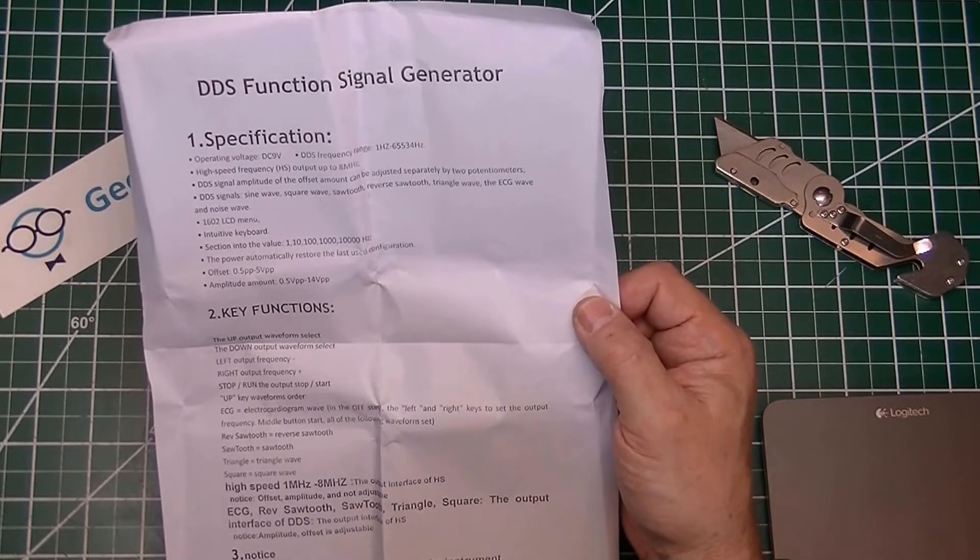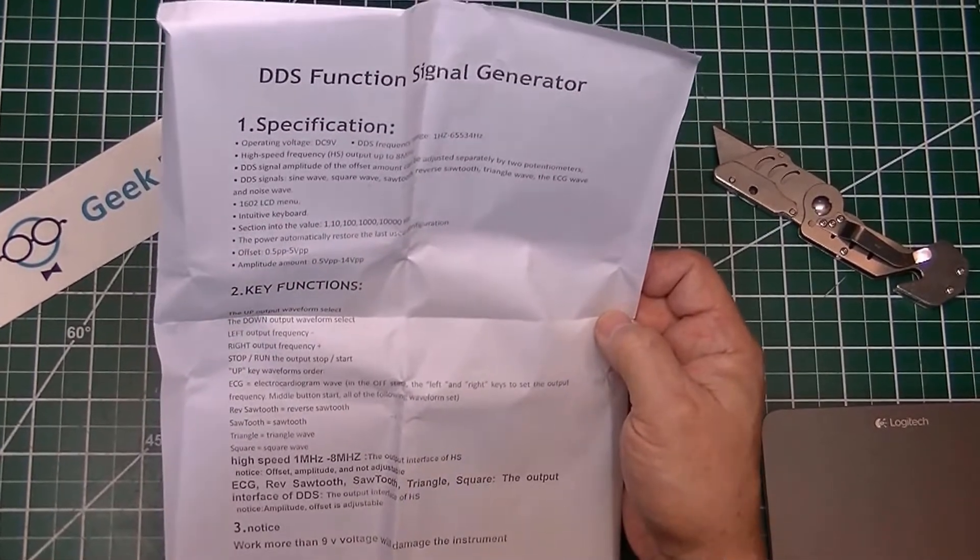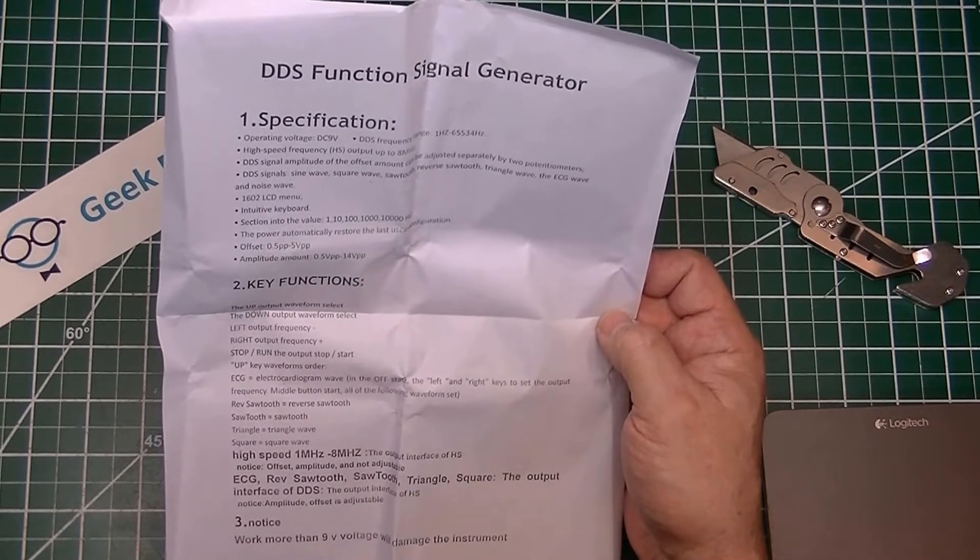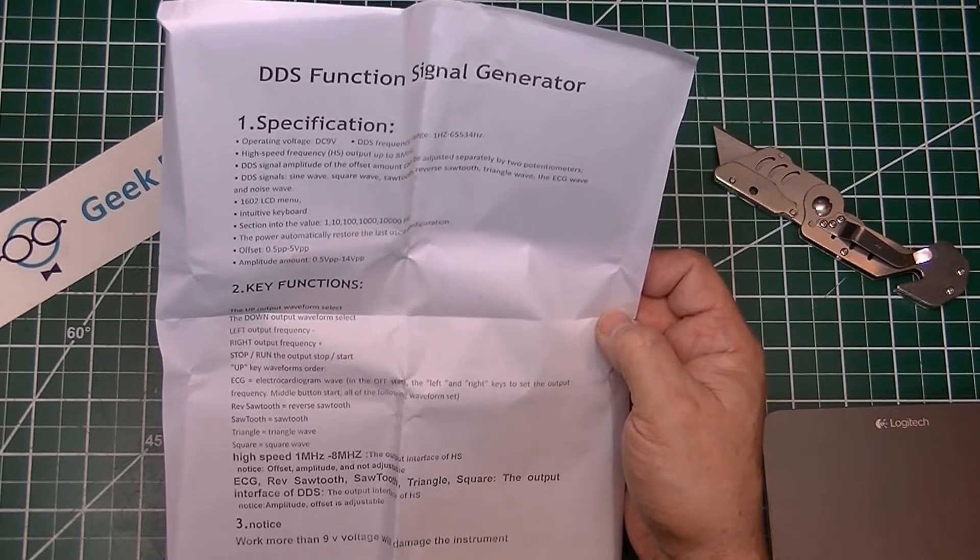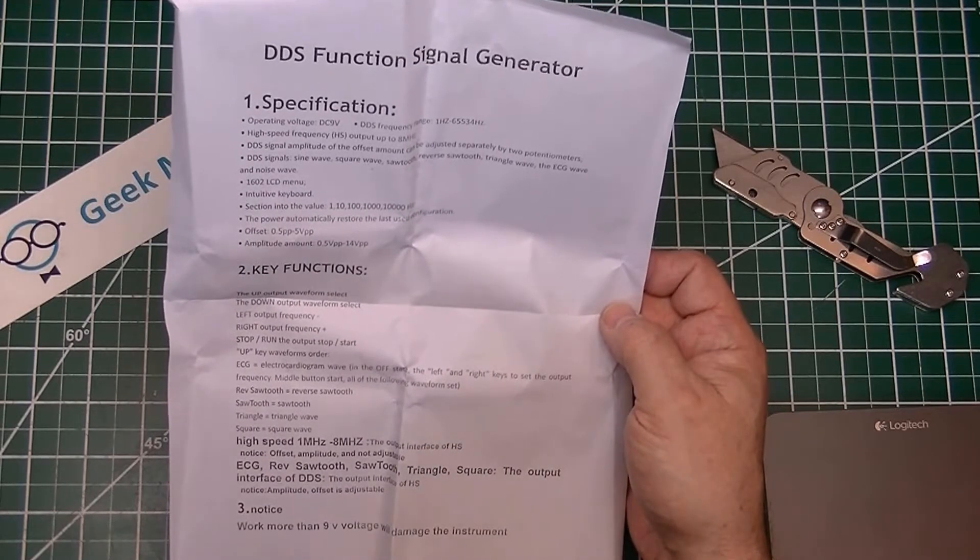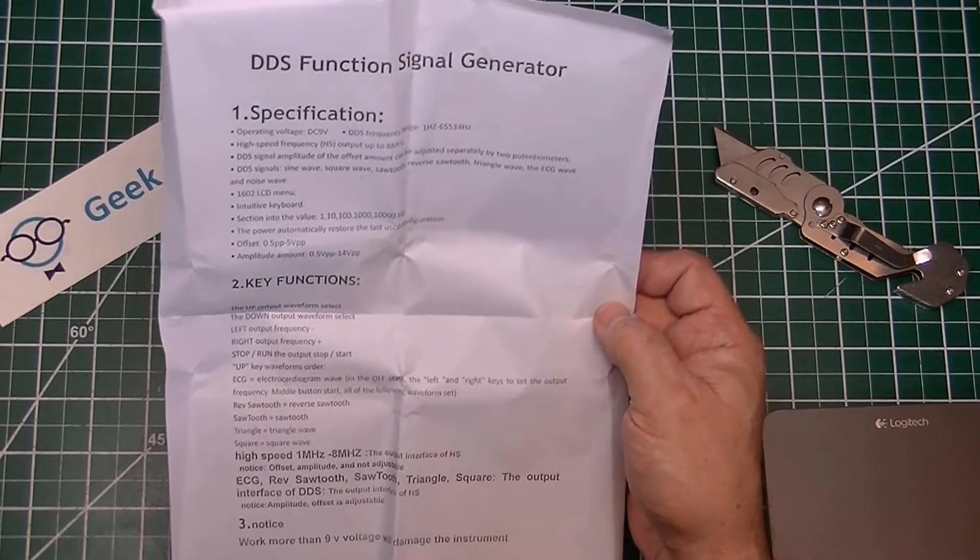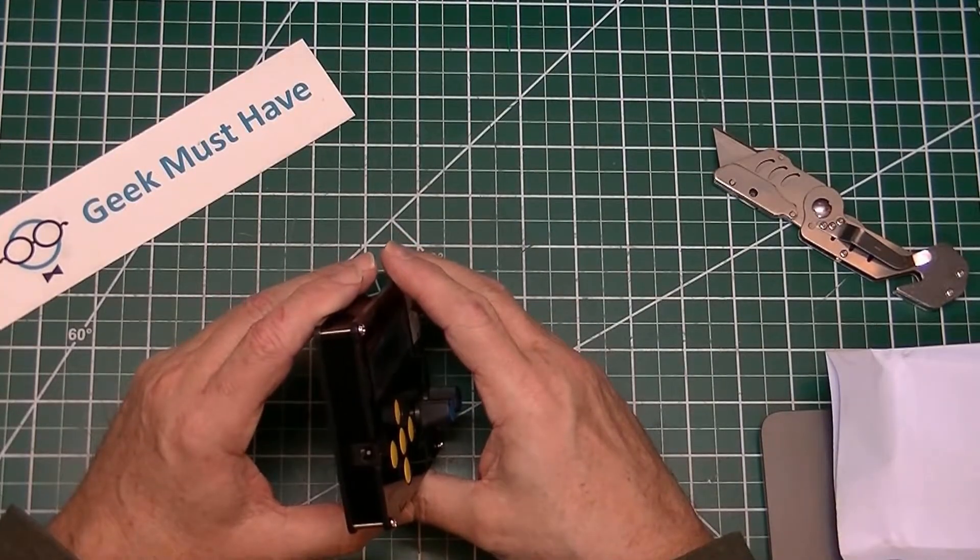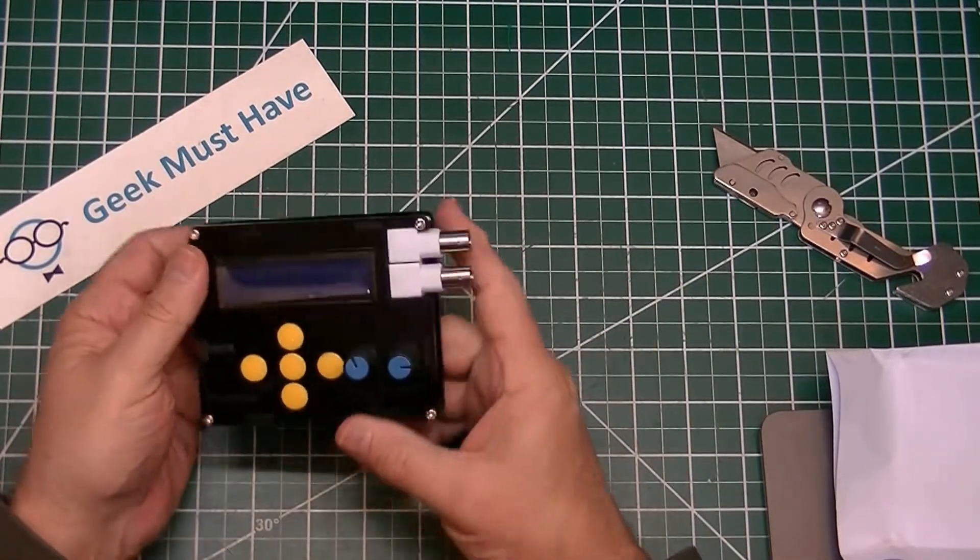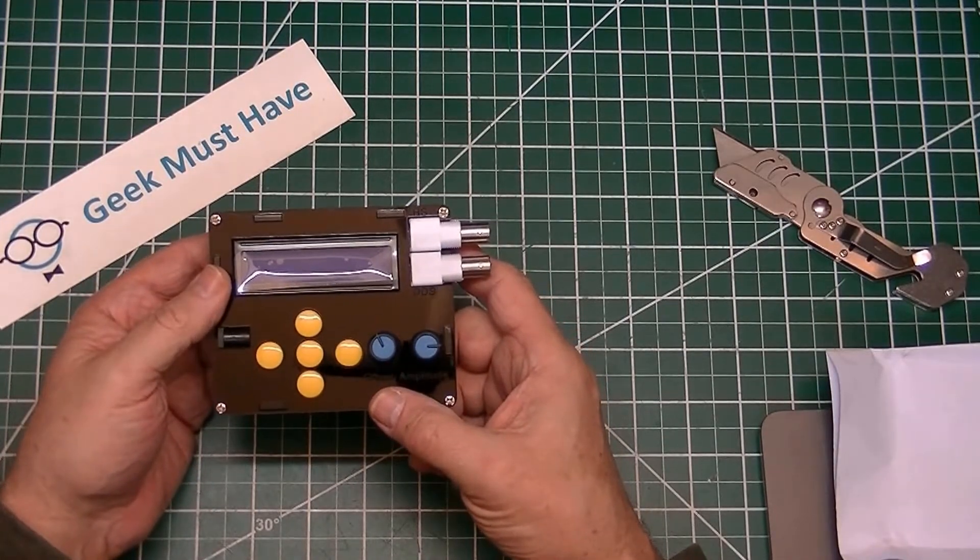It has a 1602 LCD menu with key functions. Up and down output waveform, frequency stop and run. Waveforms include electrocardiogram wave, sawtooth, triangle, and square. Notice it says work with more than 9 volts will damage the instrument. It takes a standard 2.1 millimeter jack and has some BNC connectors on the outside. I actually have to see if I have a set of extra test leads someplace from one of my old oscilloscopes.